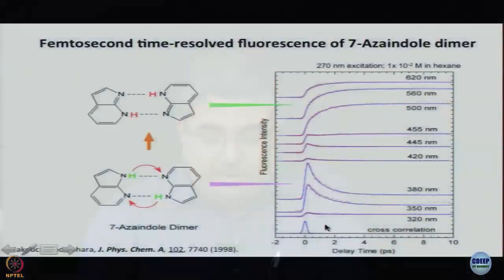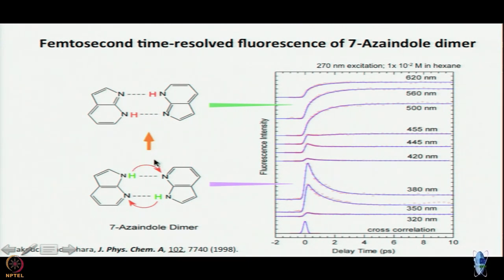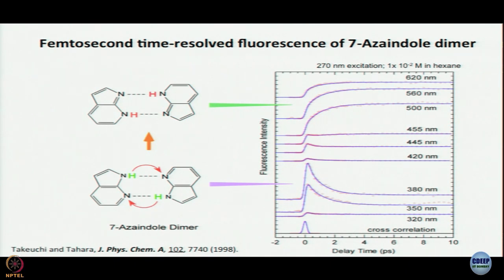If that is the case, then in the region of the non-proton-transfer locally excited dimer excited state you expect a fast decay, and in the region of emission of the proton transfer dimer you expect to see a rise. This is the expectation, and that is what they saw. So let us go through the data a little carefully.